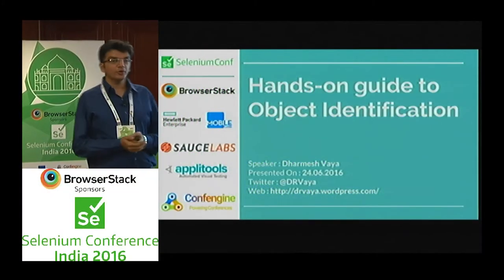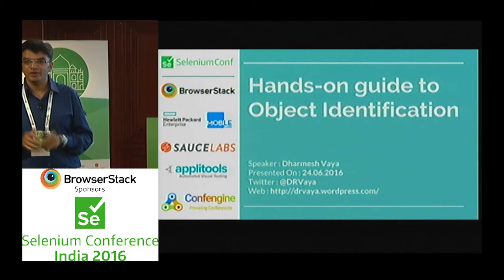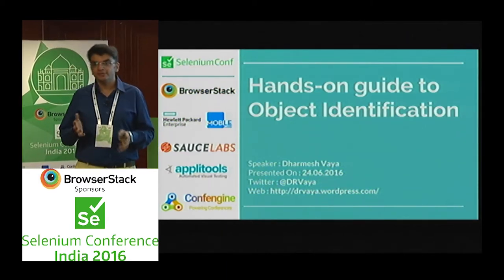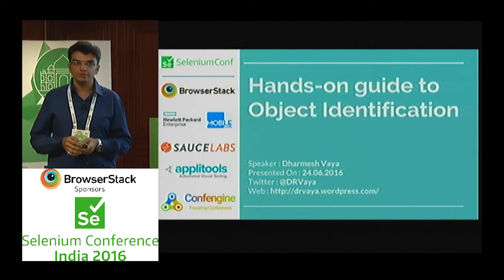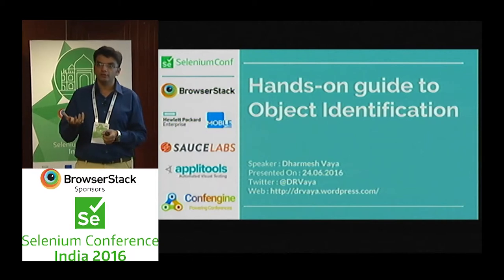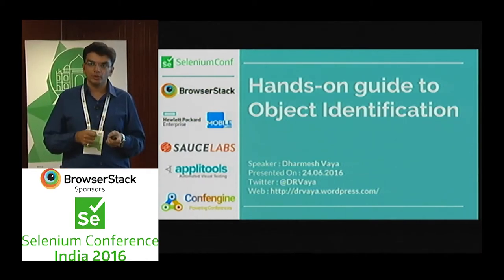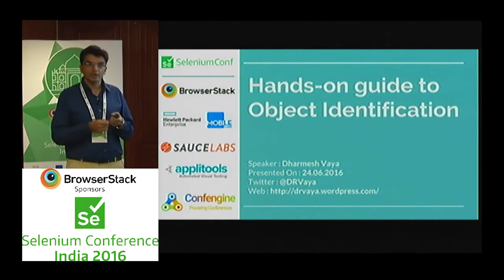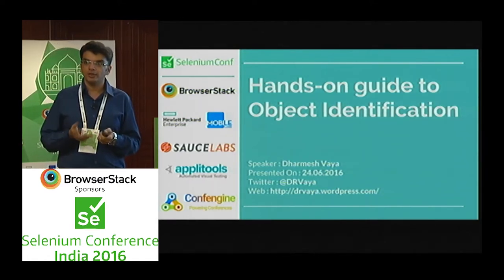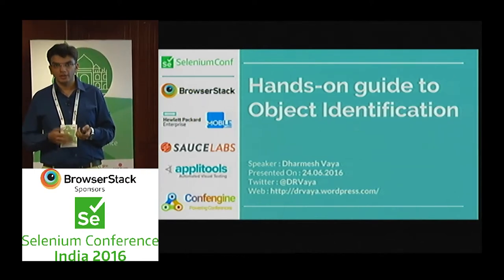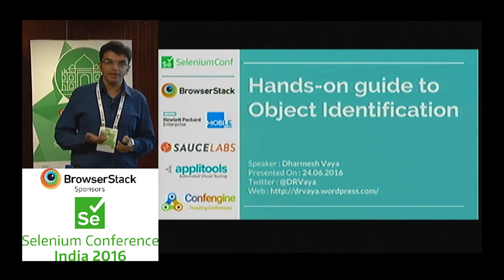Good evening everyone. This is the final talk of the day before the Q&A session. We'll do a hands-on guide to object identification — this is definitely an add-on to Oren Rubin's session on statistical element locators. We're going in depth on object locators, best practices to identify them, and covering locators like CSS and XPath, and how Selenium uses them. Consider this a 101 tutorial on object identification, one of the most basic aspects of automation.